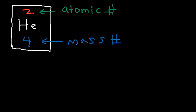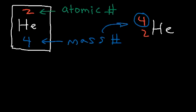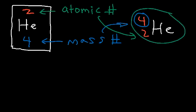An isotope of helium can be written with the mass number on top and the atomic number below. The mass number is the larger of the two; the atomic number is the smaller one. On a periodic table, the top number is usually the atomic number. Whichever number is lower is the atomic number; the higher one is the mass number — so don't get confused about that.